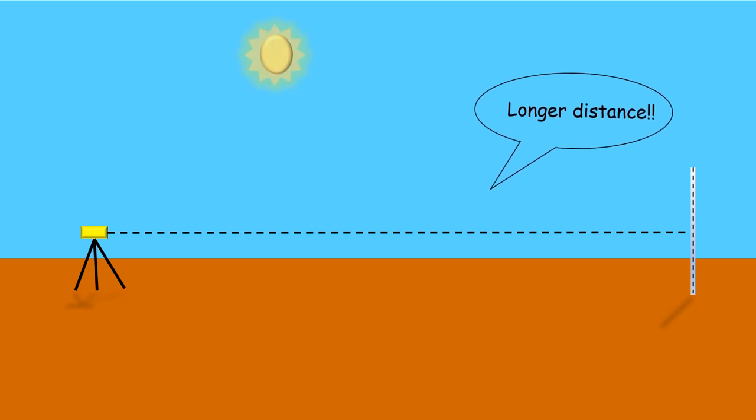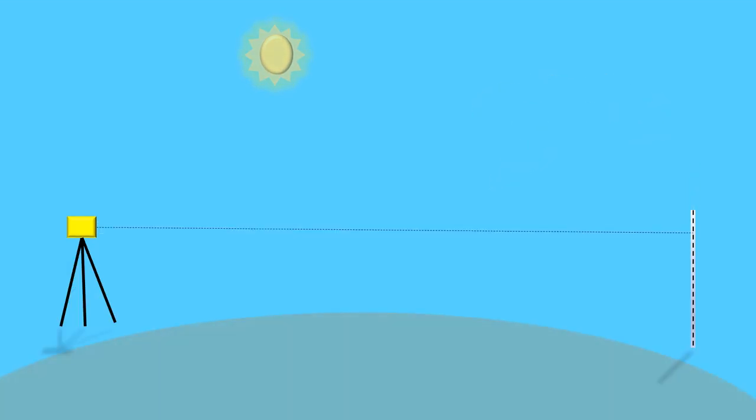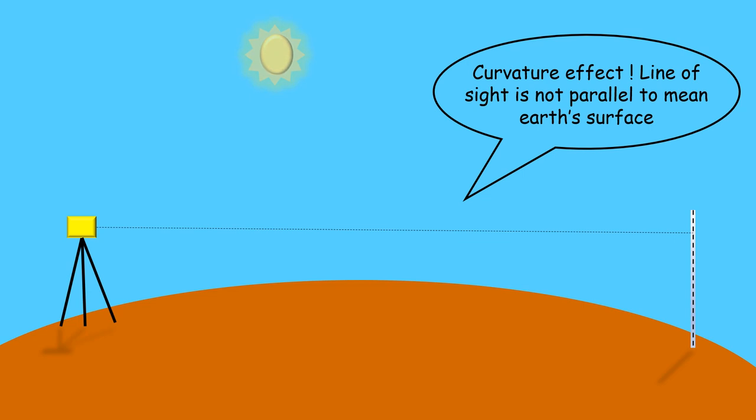But if leveling is done between two stations at longer distance, then curved nature of earth has to be considered. Here, line of sight is not parallel to the mean earth's surface.